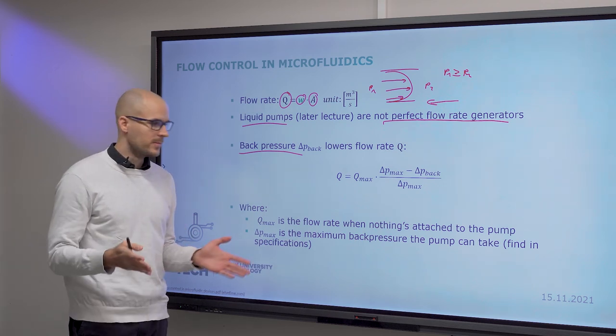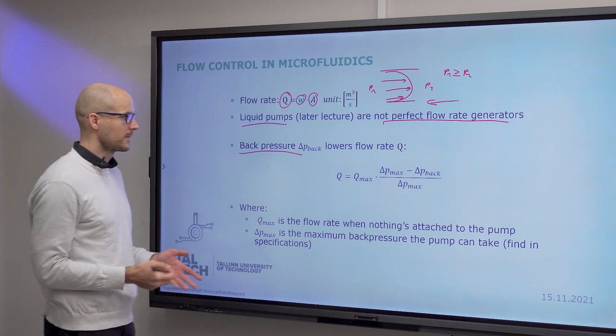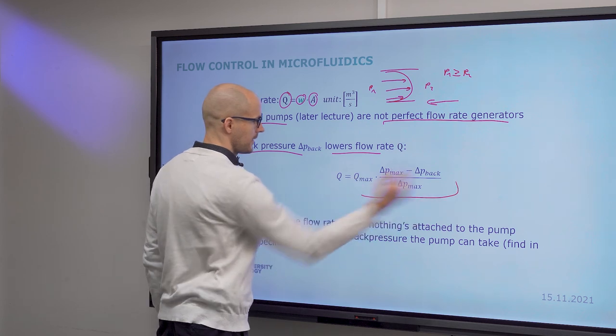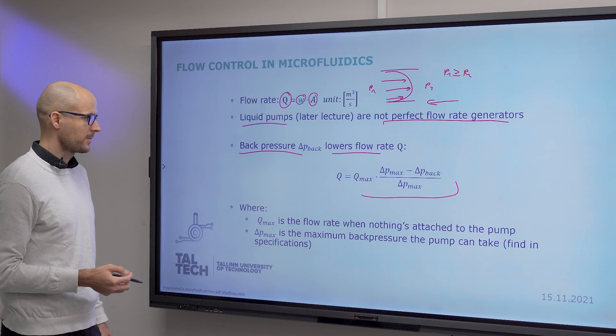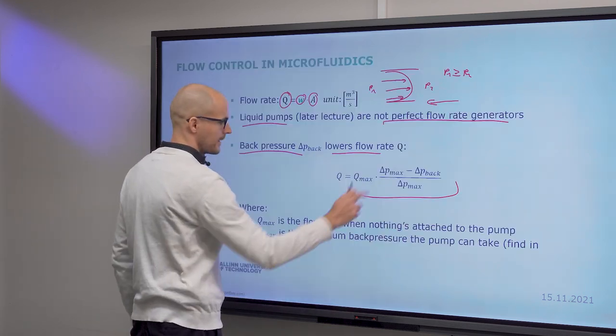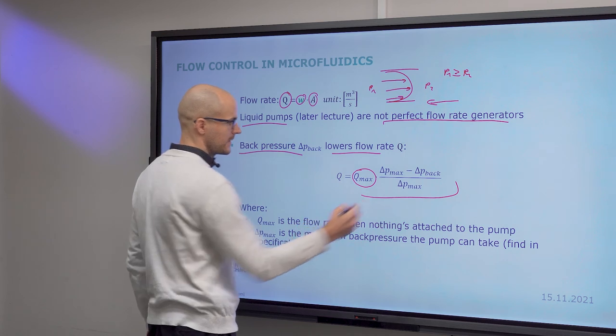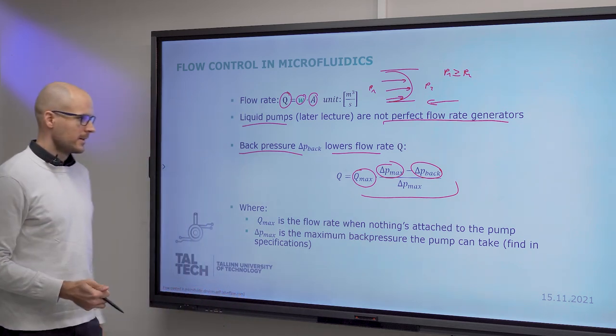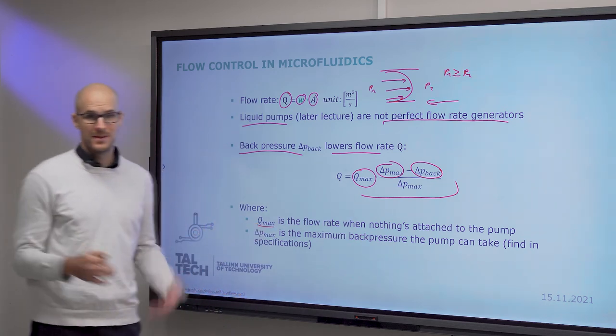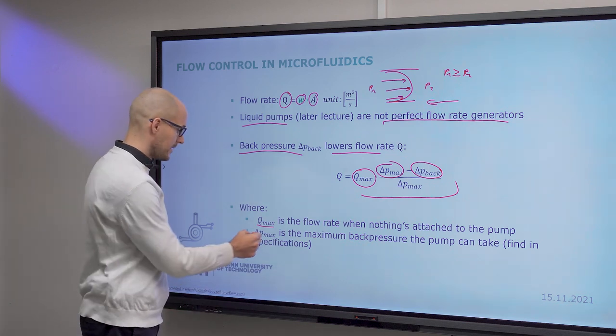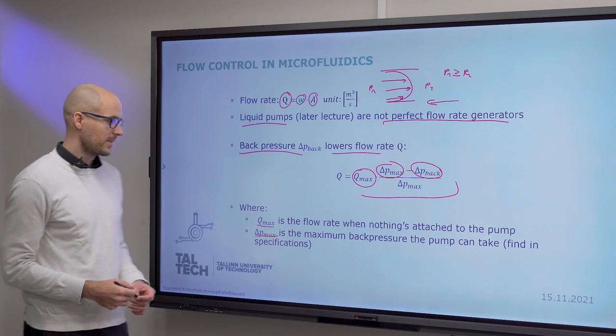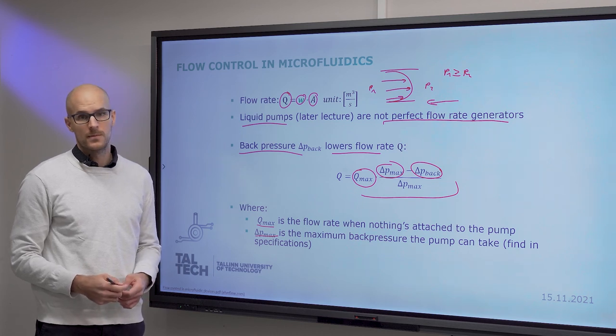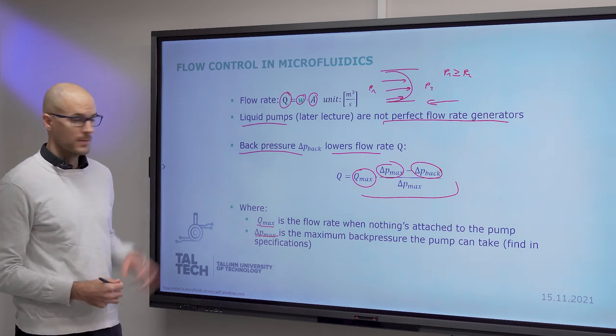Or as the tubing expands and contracts, there can be many effects causing a back pressure that lowers the flow rate as this equation or as this expression tells us. So Q-Max is the theoretical maximum flow rate, maximum pressure achievable and the back pressure. And Q-Max is what you can get if nothing is attached to the pump. And likewise, P-Max is the maximum back pressure that the pump can take. This should be available to you from specifications of your product. So it's good to be aware of this.